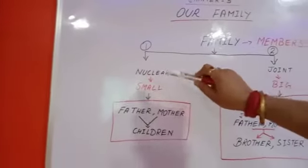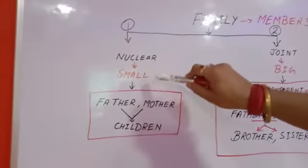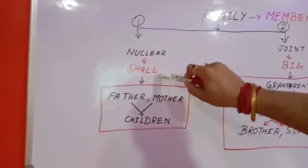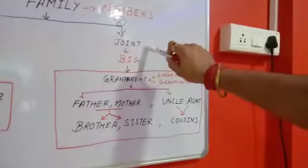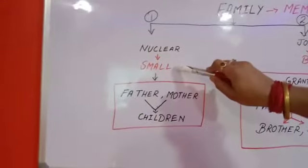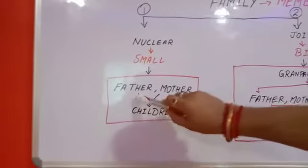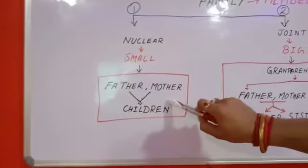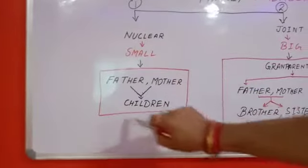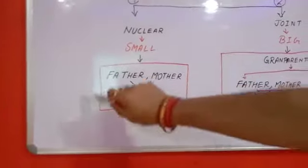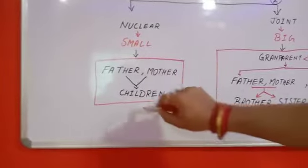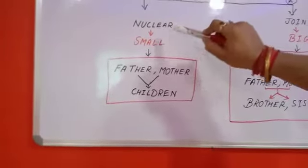Now what is nuclear family? Nuclear family is also known as a small family. In a nuclear family there are father, mother and their one or two children. They are living separate from the other members of the family. Father, mother and their children living together are called a nuclear family — it is also called a small family.